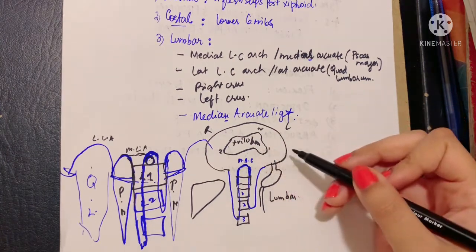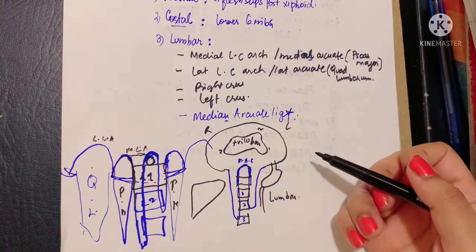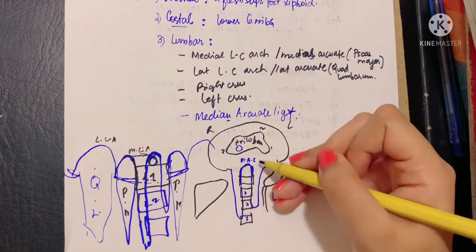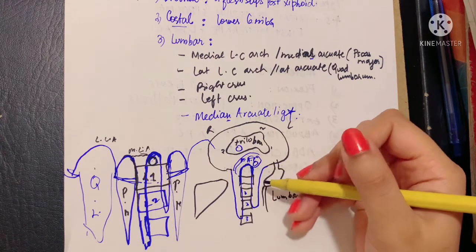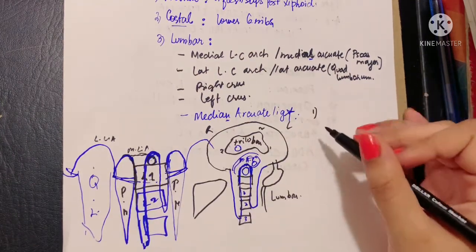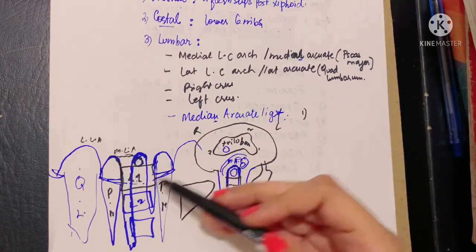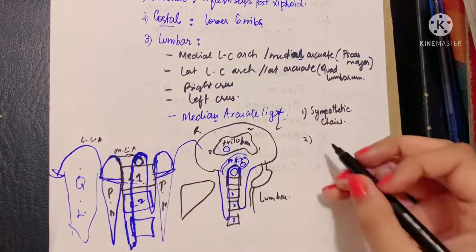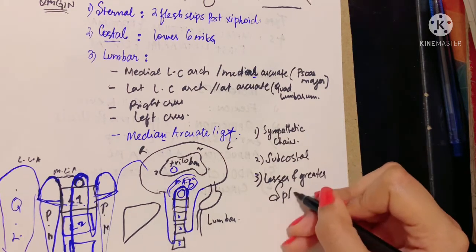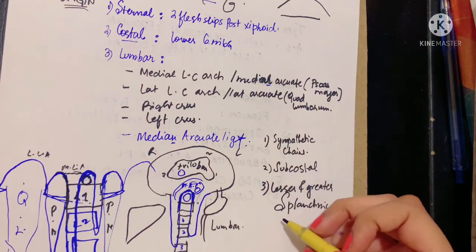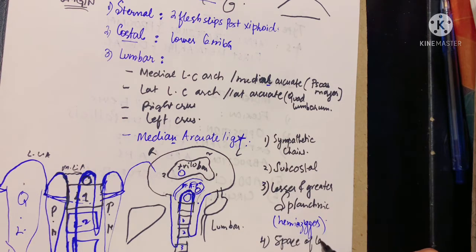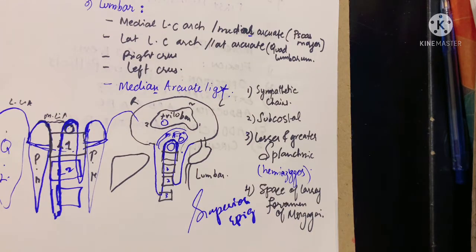The diaphragm bears three large openings: the caval opening in the central tendon, the esophageal opening formed by splitting of the right crus, and the aortic opening. Regarding smaller openings: behind the medial arcuate ligament on either side lie the sympathetic chains; behind the lateral arcuate ligaments lie the subcostal nerves and vessels. The lesser and greater splanchnic nerves pierce both crura. Additionally, the hemi-azygos vein pierces the left crus only. The space of Larrey, or foramen of Morgagni, allows passage of the superior epigastric vessels.